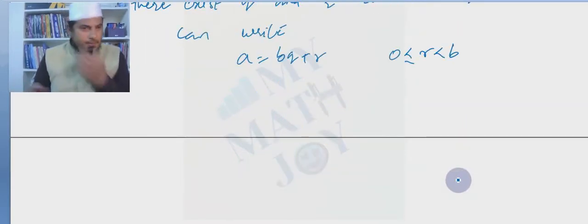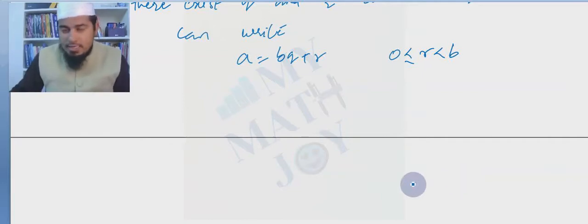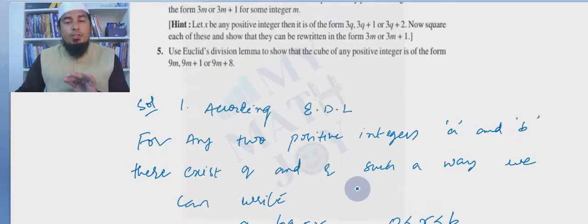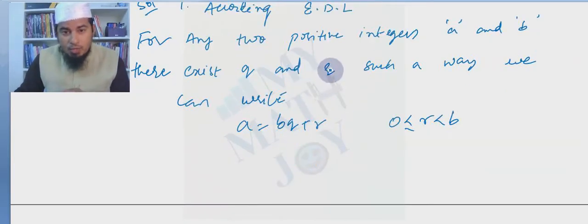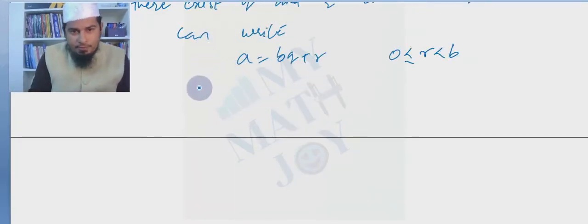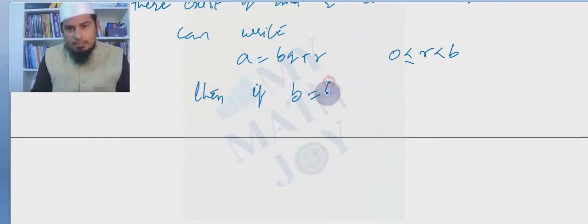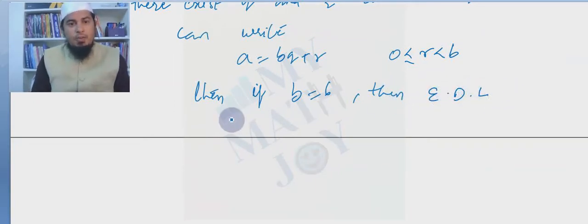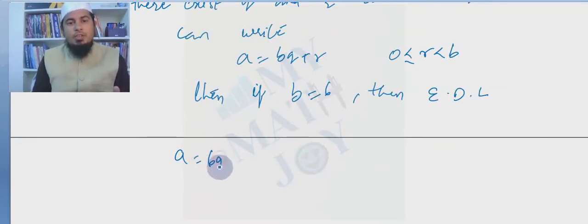The question tells us to show that any positive odd integer is of the form 6q+1. Since we see 6q, that means b should be 6. If b is 6, Euclid's division lemma tells us any positive integer a can be written as a = 6q+0, or 6q+1, or 6q+2, and so on.